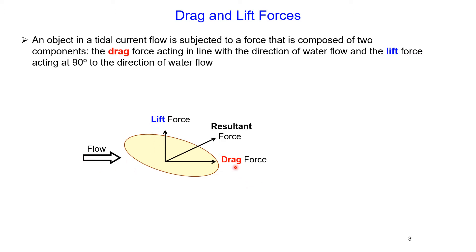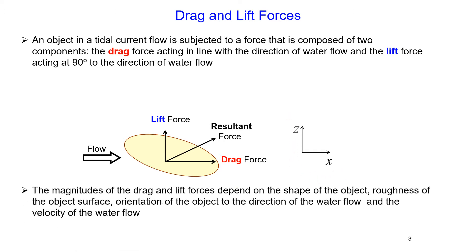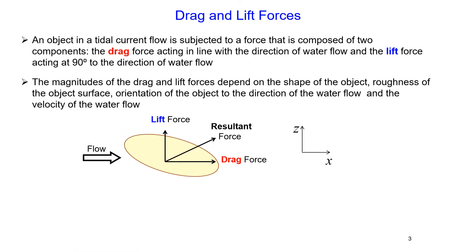The coordinate system used in this lecture has a horizontal axis x and vertical axis z. The magnitude of the drag and lift forces depend on the shape of the object, the roughness of the object surface, the orientation of the object to the direction of the water flow, and the velocity of the water flow.